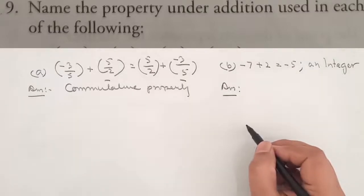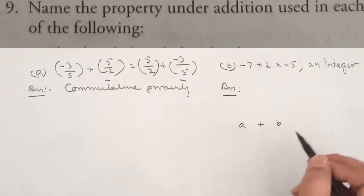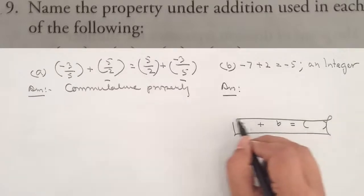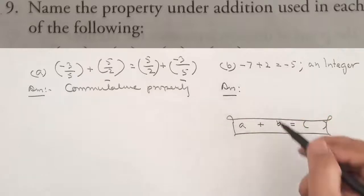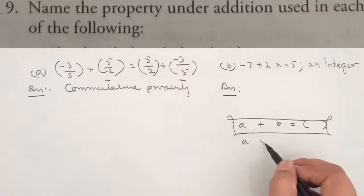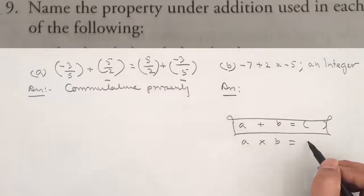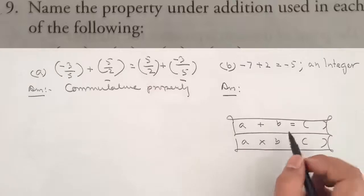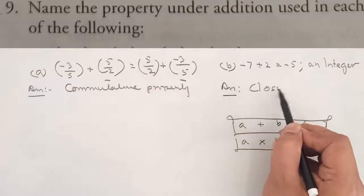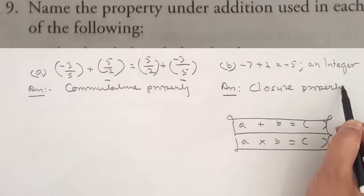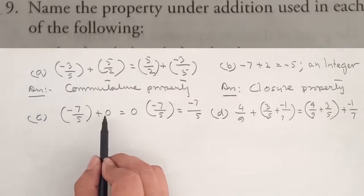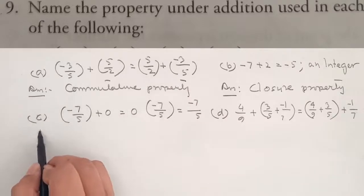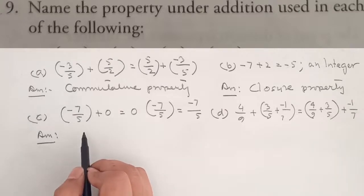For any integer, when we consider a value and look at a plus expression giving a total, we use the closure property. Similarly, when we see a number added to 0 and the result is the same number, that is the additive identity — 0 is the additive identity for rational numbers.